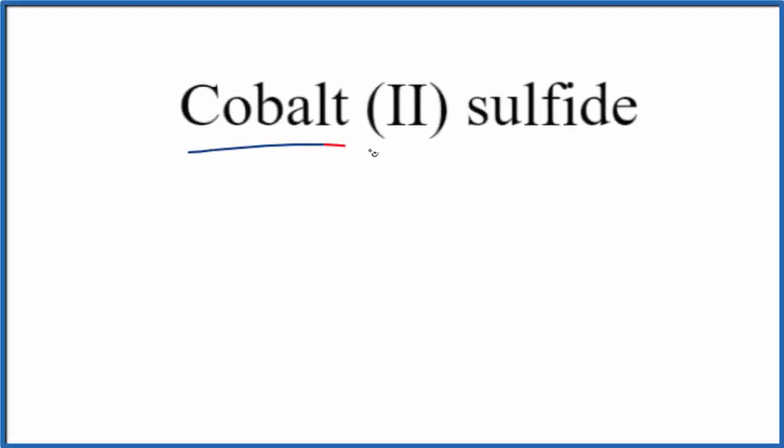In this video we'll write the formula for cobalt (II) sulfide. So first let's write the element symbol for cobalt, that's Co.